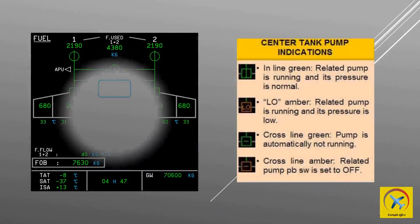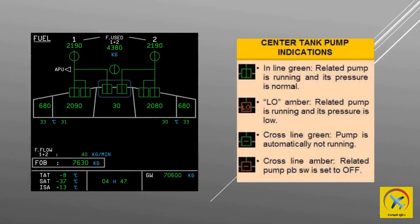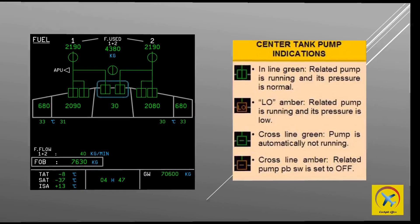The center tank pump indications: in-line green means the related pump is running and its pressure is normal. Low amber means the related pump is running and its pressure is low. Cross-line green shows the pump is automatically not running. Cross-line amber shows the related pump push button switch is set to off.